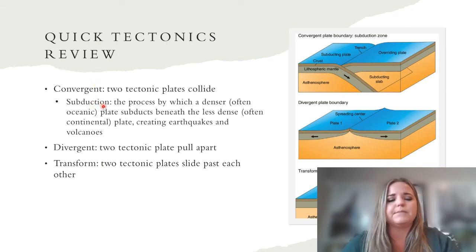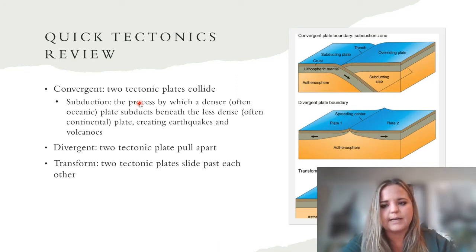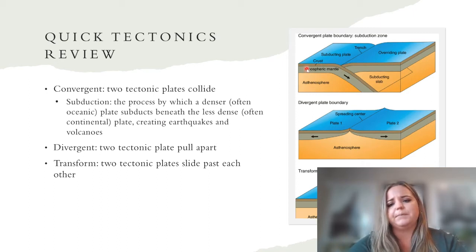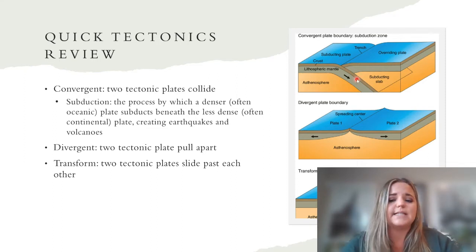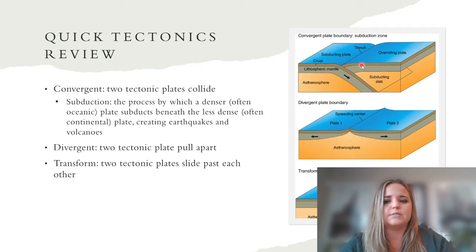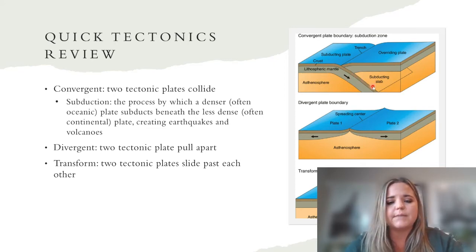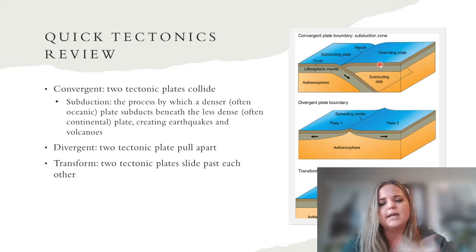Convergent plate boundaries can lead to subduction, especially when an oceanic plate and a continental plate collide. The oceanic plate subducts beneath the continental plate because it is denser — oceanic crust is mostly basalt while continental crust is mostly granite, and granite is less dense than basalt. That sinking allows water from the top of the subducting plate to go down into the mantle, lowering the melting temperature and allowing plumes of magma to rise, creating volcanoes and plutons.